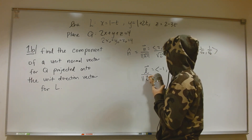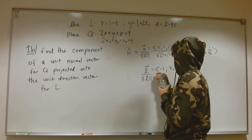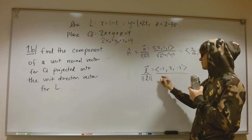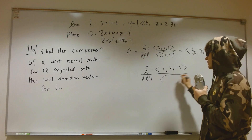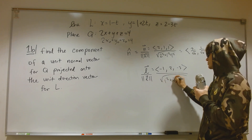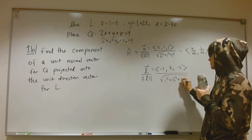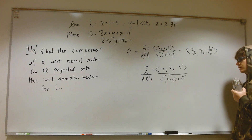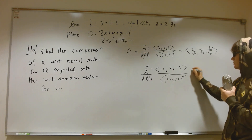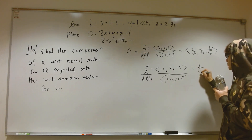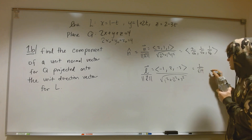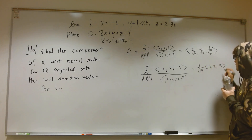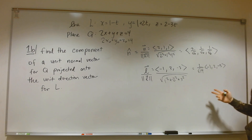Now I divide by the length of this direction vector. The length is √(1² + 2² + 3²) = √(1 + 4 + 9) = √14. So the unit direction vector L̂ = (1/√14)(−1, 2, −3).